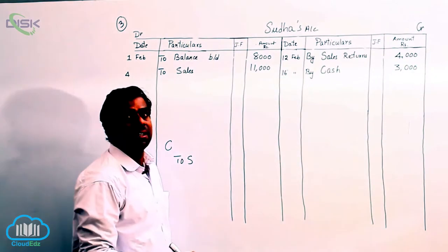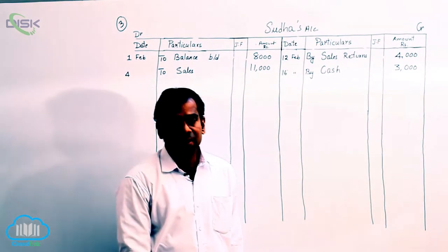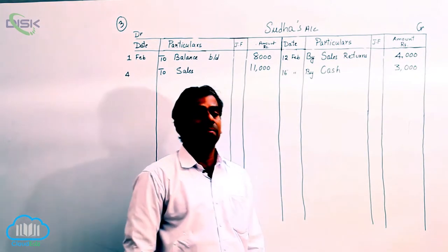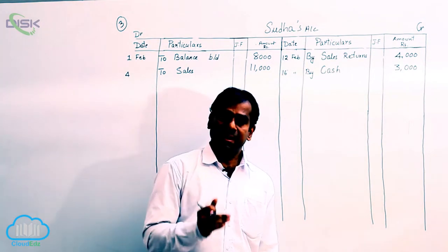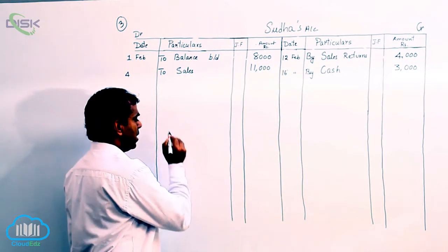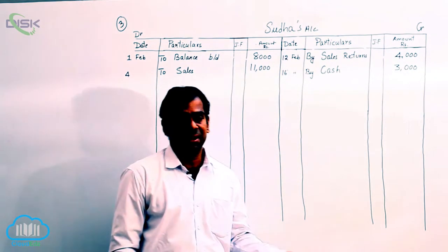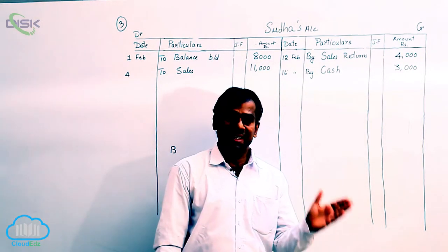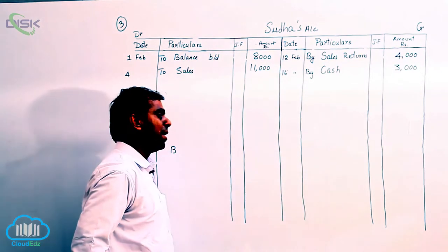Now let us see the next transaction which is on 22nd. It states that received check from Sudha. So whenever we receive check, we know that a bank is involved. So bank is a personal account and also Sudha is a personal account. So what does this bank ultimately doing? It is collecting the money from Sudha and adding in our account or crediting our account.